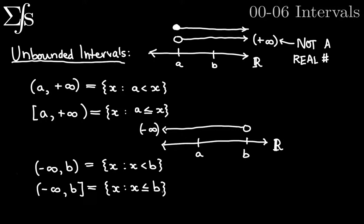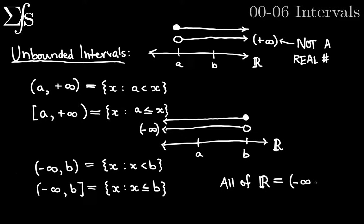So these are unbounded intervals — they can go on forever in a particular direction. There's only one other type of unbounded interval, which is the whole set of real numbers. All of R is equal to the unbounded interval negative infinity comma positive infinity. That's another way of writing all of the real numbers, since we're not including infinity and negative infinity at the endpoints. However, it's usually just more convenient to write the double-stroke R, as it takes up less space.